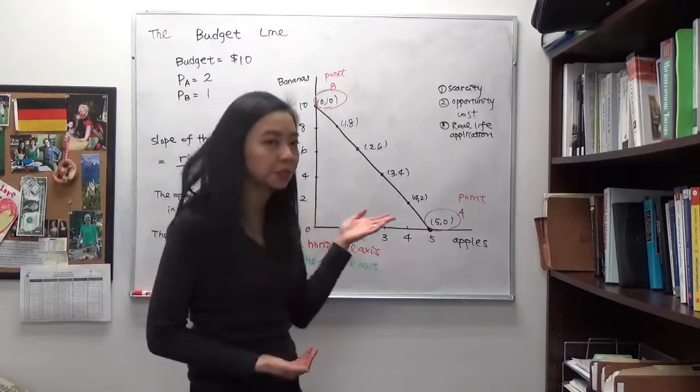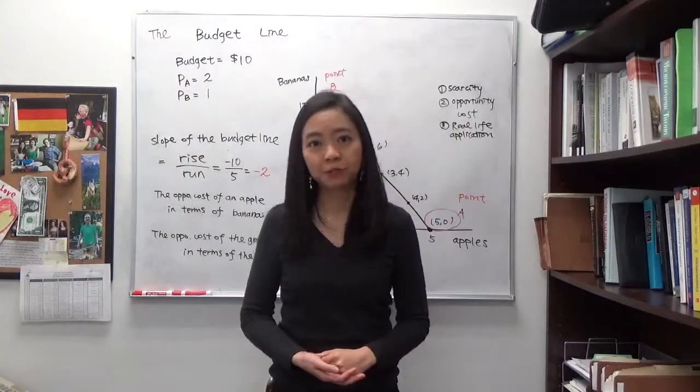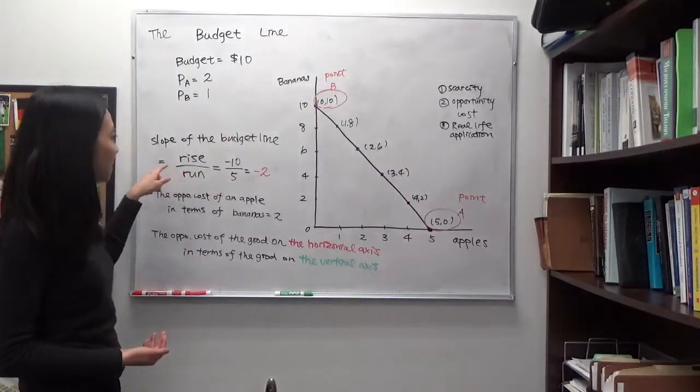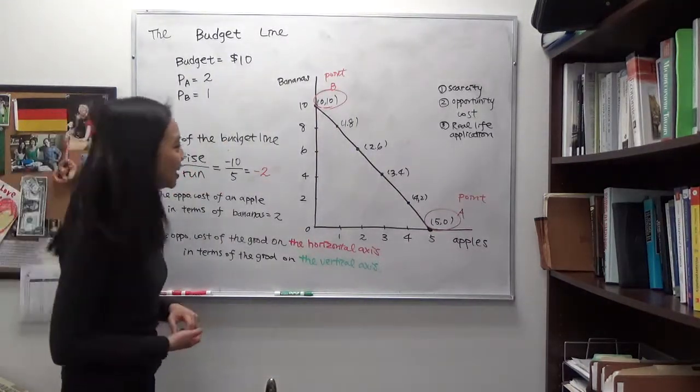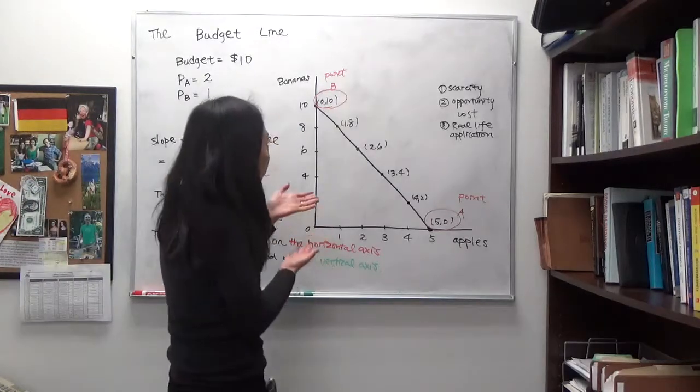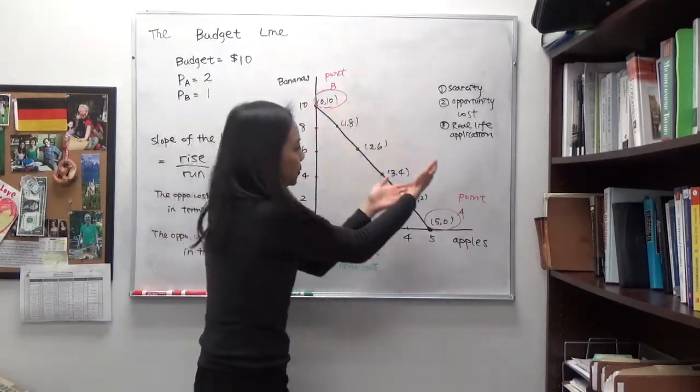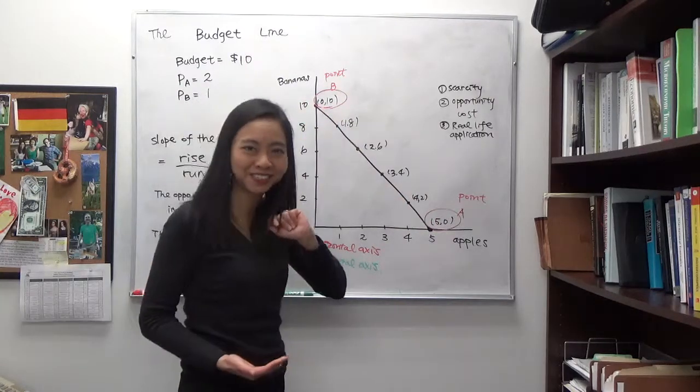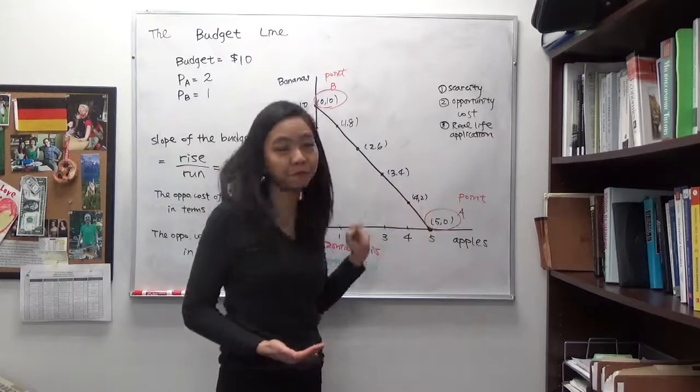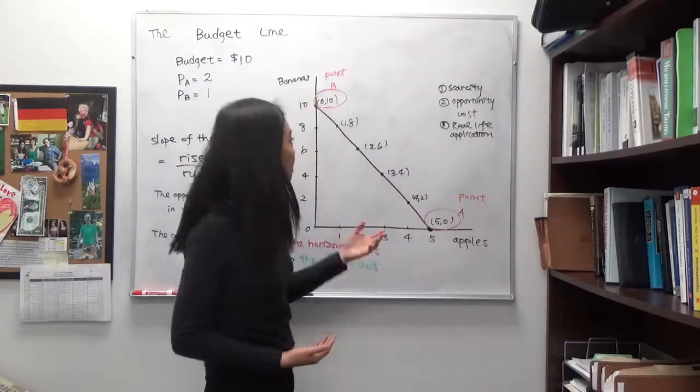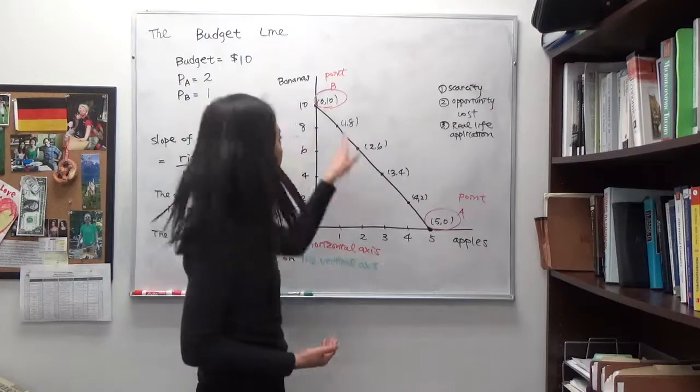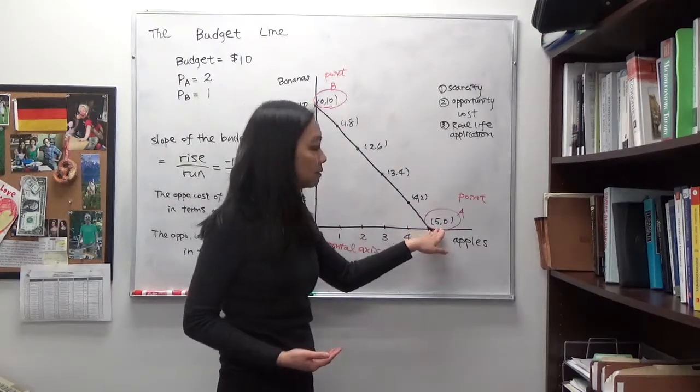And you can calculate the slope of a budget line. How do you calculate the slope? We know slope is rise over the run. And what is the rise? Suppose we're going from point B to point A. Point B is that you have 0 apples and 10 bananas. And point A is that you have 5 apples and 0 bananas. So you're going from point B to point A, meaning we're going from point 0,10 to point 5,0.